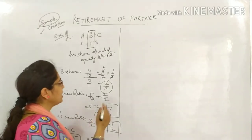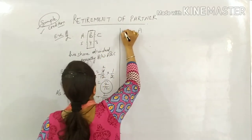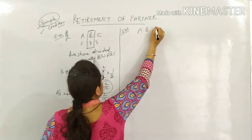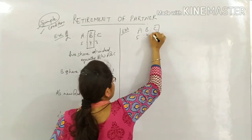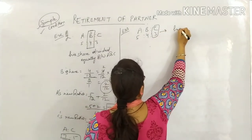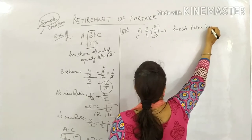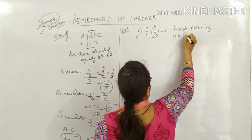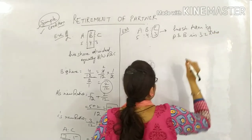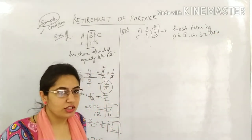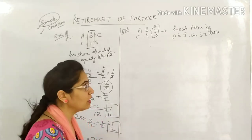Now Example 3 is based on the same partners. A, B, C are 3 partners with profit sharing ratio 5:4:3. C retires from the business and his share is taken by A and B in the ratio 3:2. So C's share will be distributed between A and B in 3:2 ratio.